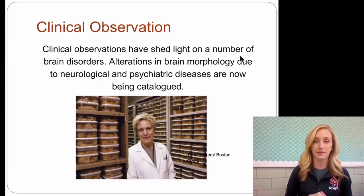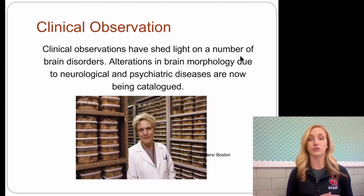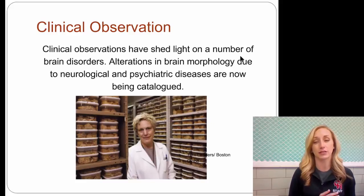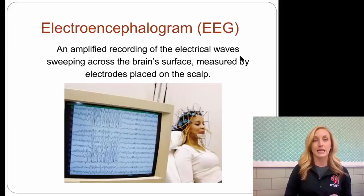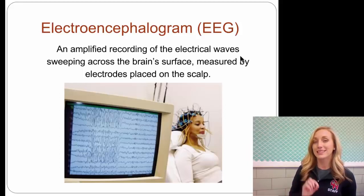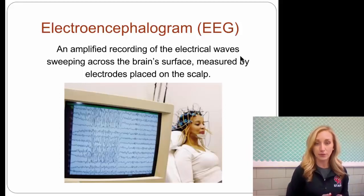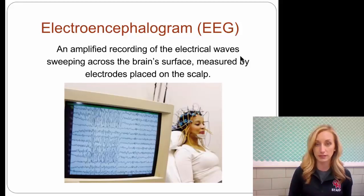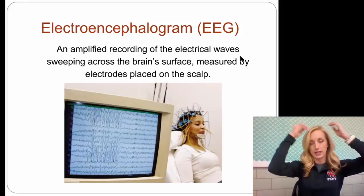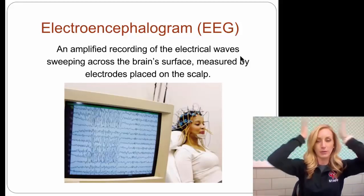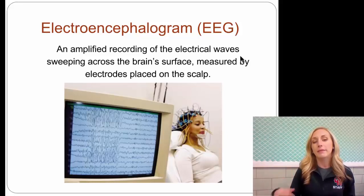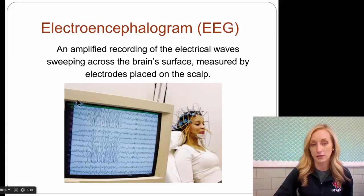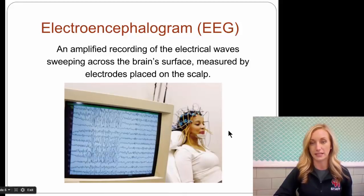Clinical observation sheds light on a number of brain disorders. Alterations in brain morphology due to neurological and psychiatric diseases are now being catalogued. An electroencephalogram, or EEG, is an amplified recording of the electrical waves sweeping across the brain surface, measured by electrodes placed on the scalp. You get these electrodes placed all over you — sometimes they put a swim cap on to keep them in place — and then it shows you on a computer screen all the different kinds of waves and what that activity is.